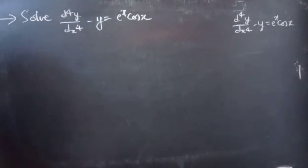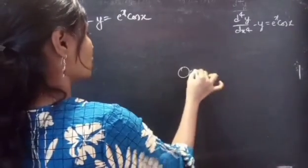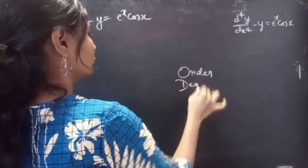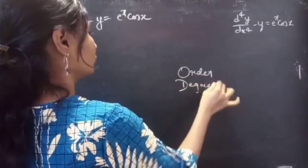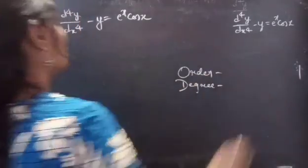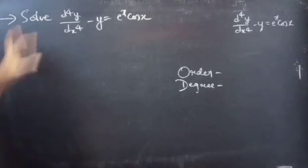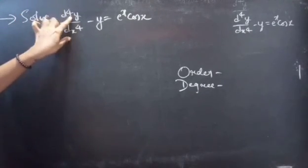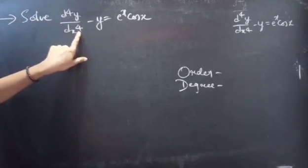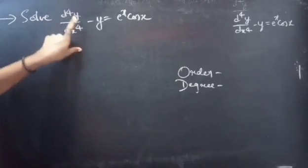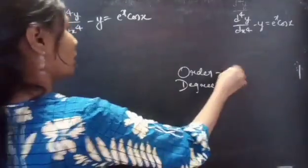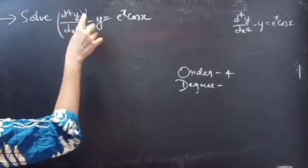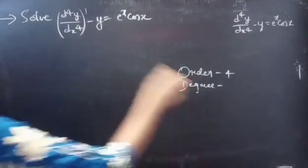Firstly, let's find the order and degree of the given differential equation. Identify the highest derivative here: d⁴y/dx⁴ is the highest derivative. So our order will be 4, and the highest power of the highest derivative — the degree — is 1.